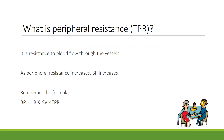One other factor that plays a role in blood pressure is TPR, or total peripheral resistance — the resistance to blood flow through the vessels. As peripheral resistance increases, blood pressure increases, as you can see from the formula.